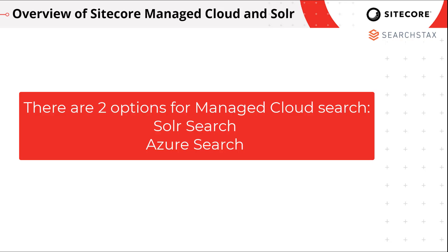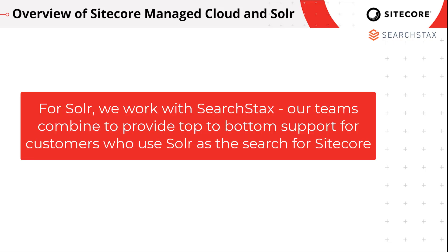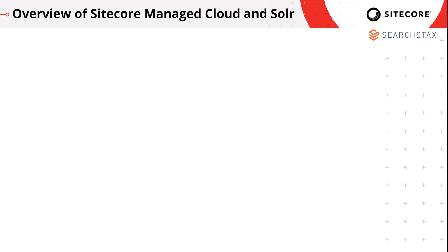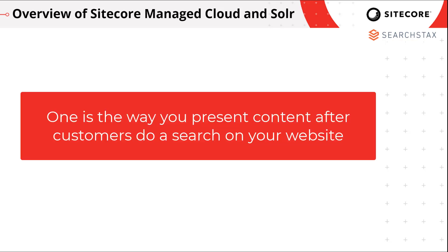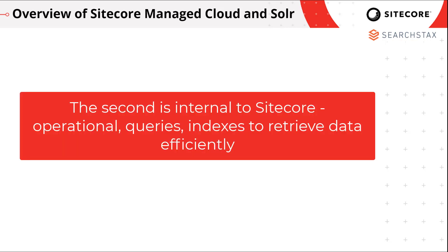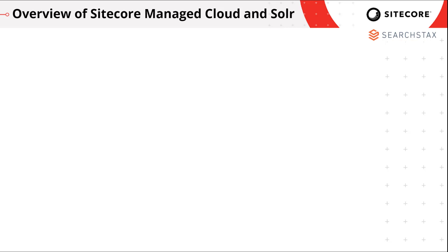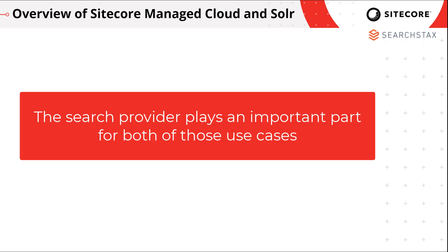When it comes to Search, there are two options: Azure Search and Solr. For Solr, Sitecore works with SearchStax, so both teams combine to provide top-to-bottom support for customers using Solr as the search provider. There are two primary ways search factors into a Sitecore implementation: one is how you present content when customers search your website — like searching a product catalog or articles — and the other is internal operational queries and indexes that Sitecore's internal microservices use to retrieve data efficiently.